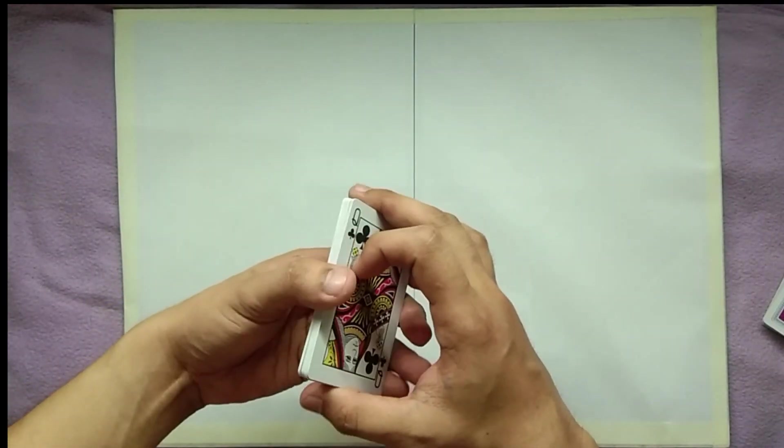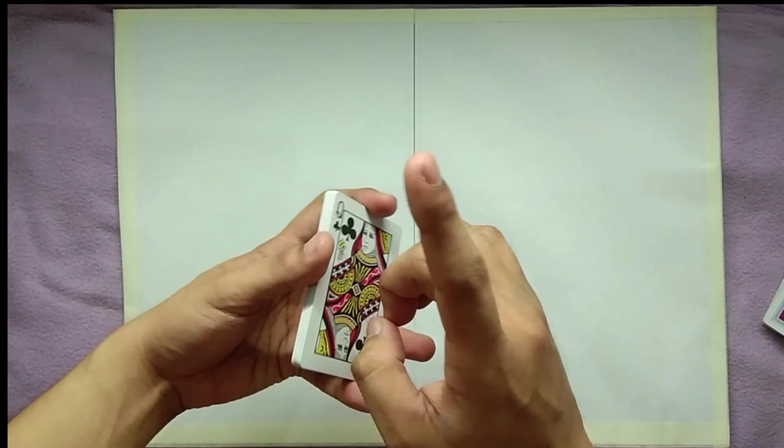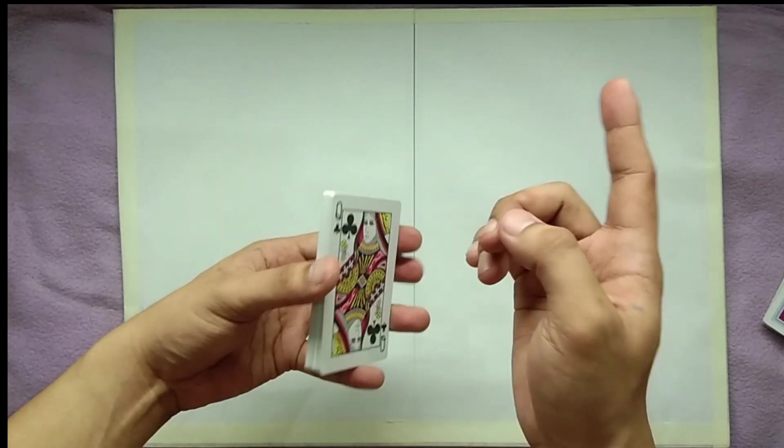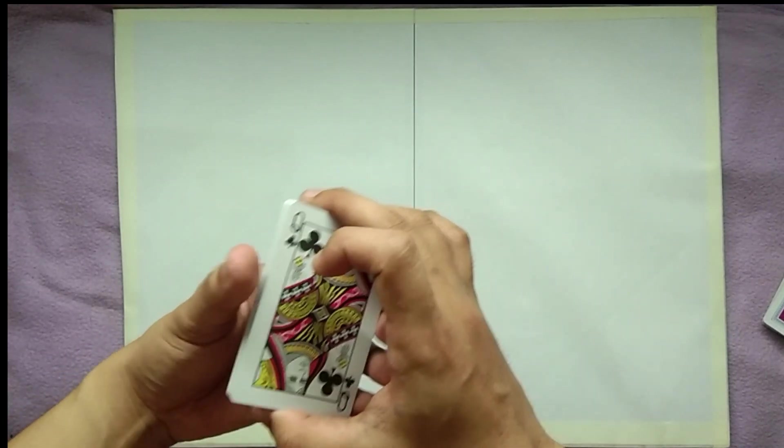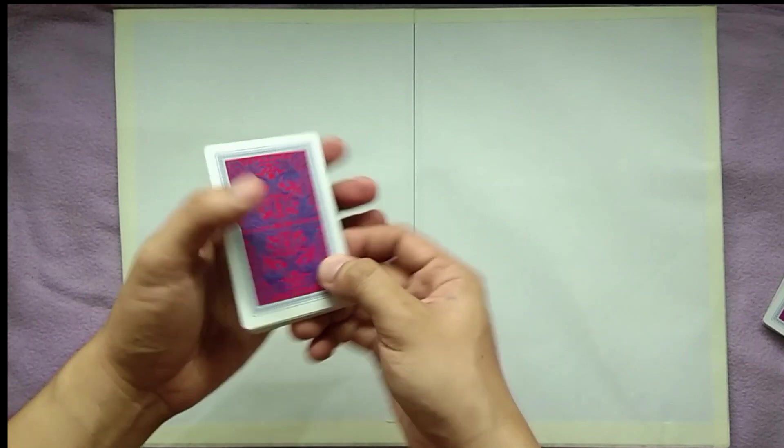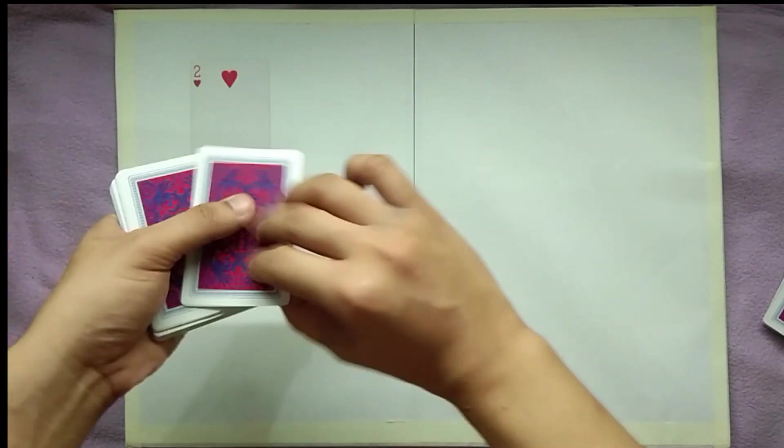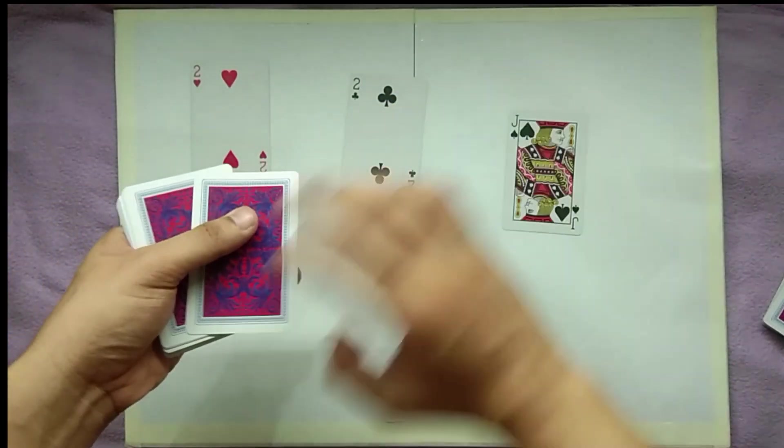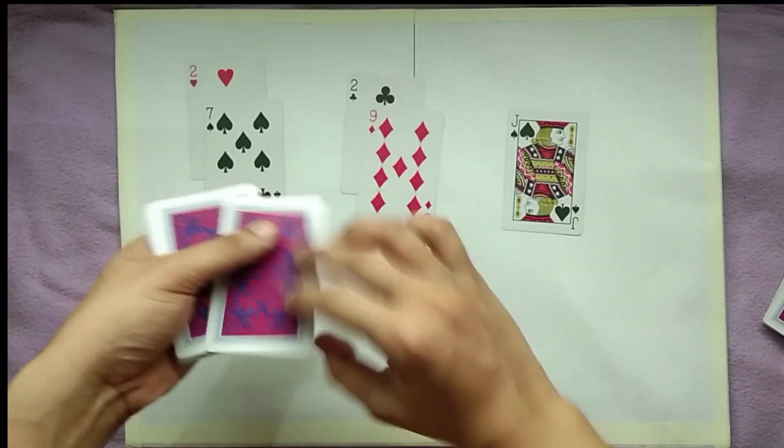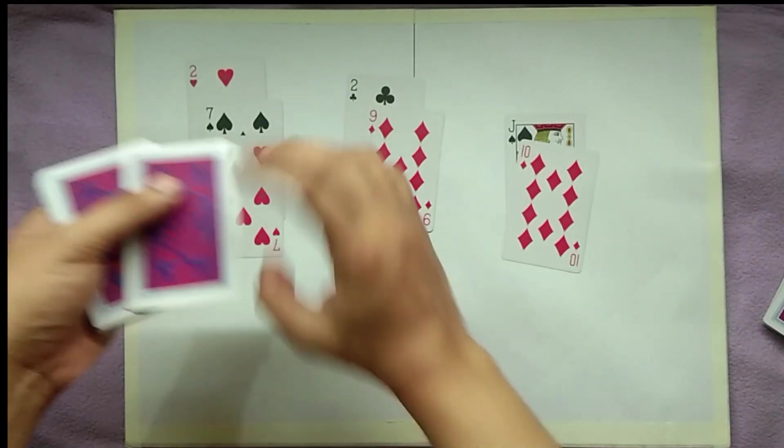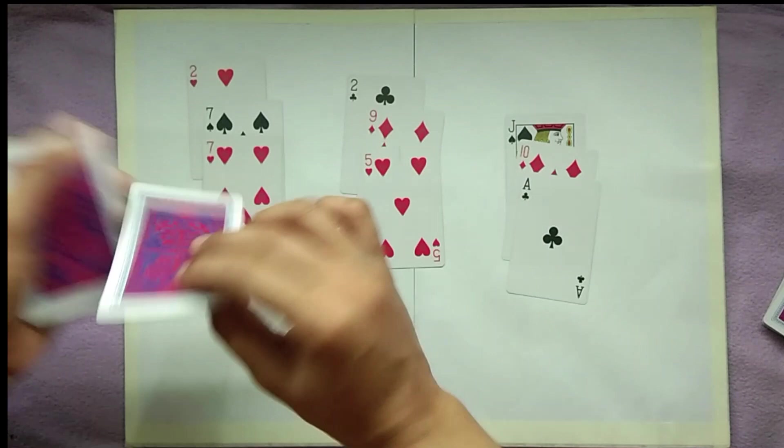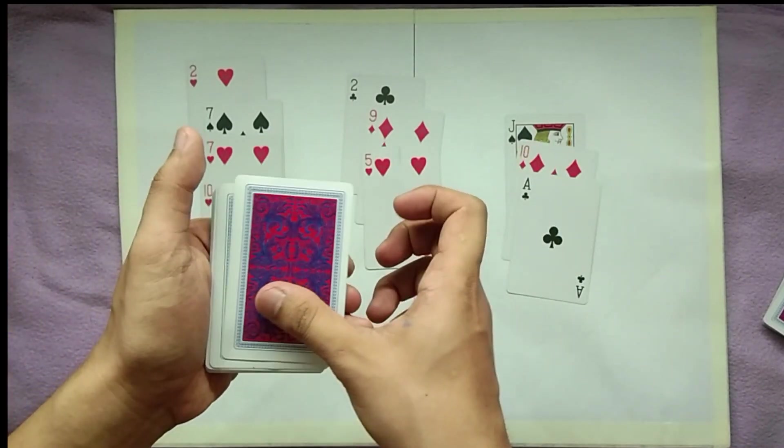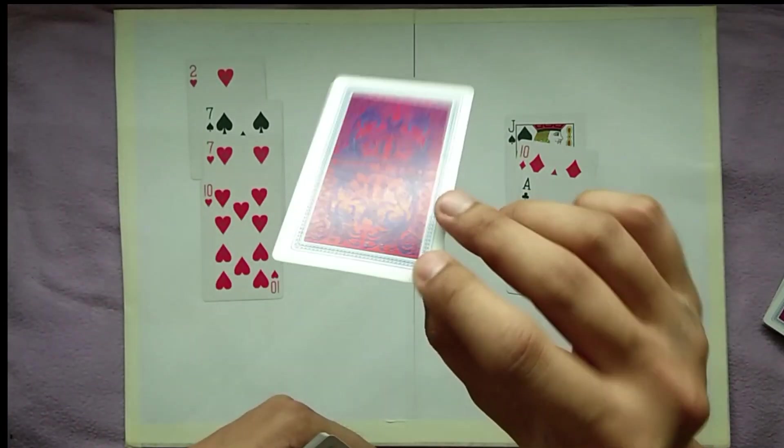Now after doing so, observe that the card chosen by your friend is always on the 11th place. Nine, ten, and this should be your friend's card.